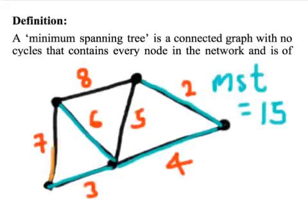Now there are other spanning trees. So for example, if I do 7, 6, 8, 2, that's a spanning tree and that's got a weight of 23, but it's not the minimum spanning tree.